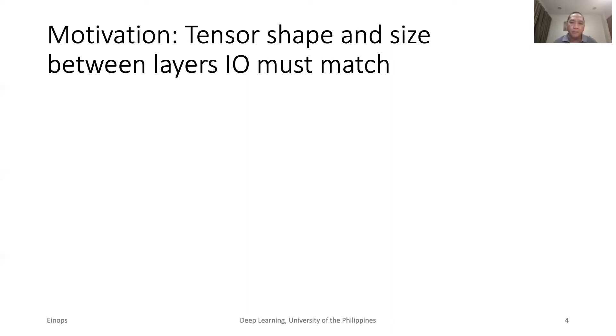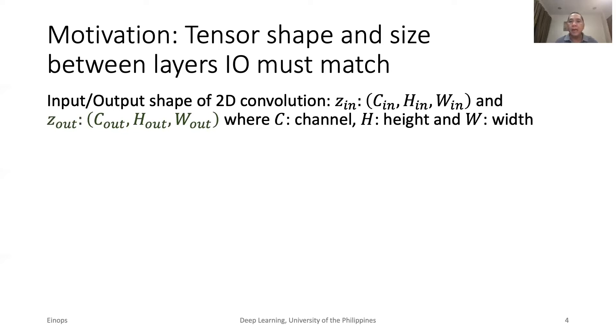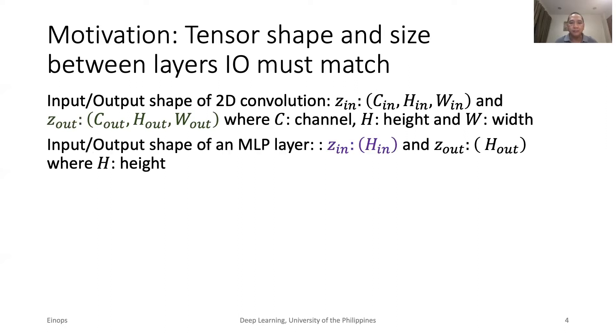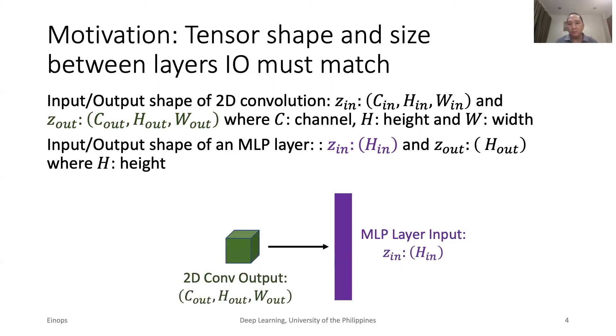Let us take a look at a typical problem in Deep Learning Model Architecture. In object recognition, convolution is used to extract features which will eventually be the input features of an MLP that is used for classification. In this example, we have 2D convolution with output size C-Alt, H-Alt, W-Alt. C is channel, H is height, and W is width. We also have here an MLP layer that requires input size of H-In, where H is height. If the output of the convolution is going to be the input of the MLP, they must have the same dimensions. This is not the case for this example. It is like we cannot force a cube to fit on a long, flat rectangle.